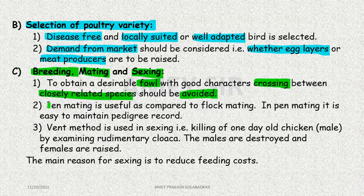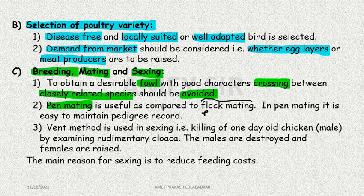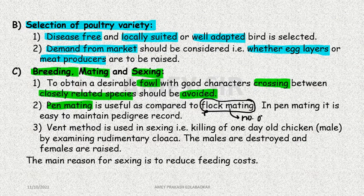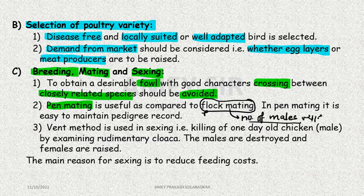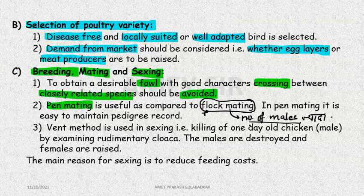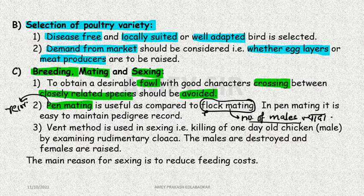There are two mating techniques: pair mating and flock mating. In flock mating, controlled breeding does not happen - we don't know the parentage because there are many males and many females, so we cannot tell which cross occurred with which. That is why in pair mating, recording a pedigree is necessary.